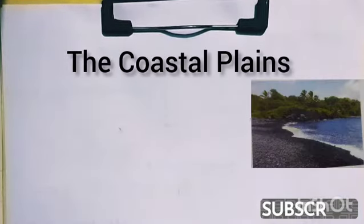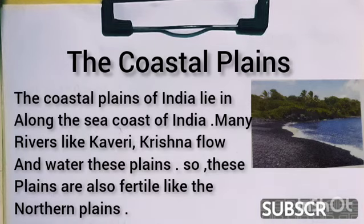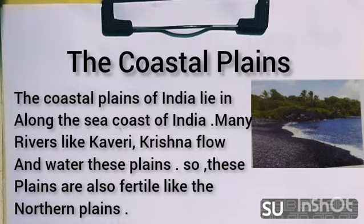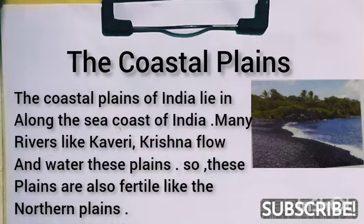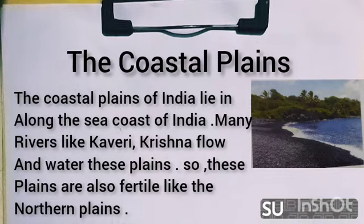The fifth physical feature of India is the coastal plains. The coastal plains of India lie along the sea coast of India. Many rivers like Kaveri and Krishna flow through and water these plains, so they are also fertile like the northern plains.